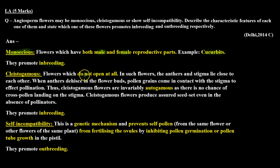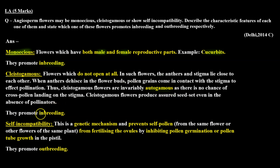Cleistogamous flowers are those flowers which always remain in a closed condition and never open. Because of this, the stigma and anther remain close to each other and they show self-pollination. That is why they are also called autogamous, and there is no chance of cross-pollination in them. Therefore, they promote in-breeding.